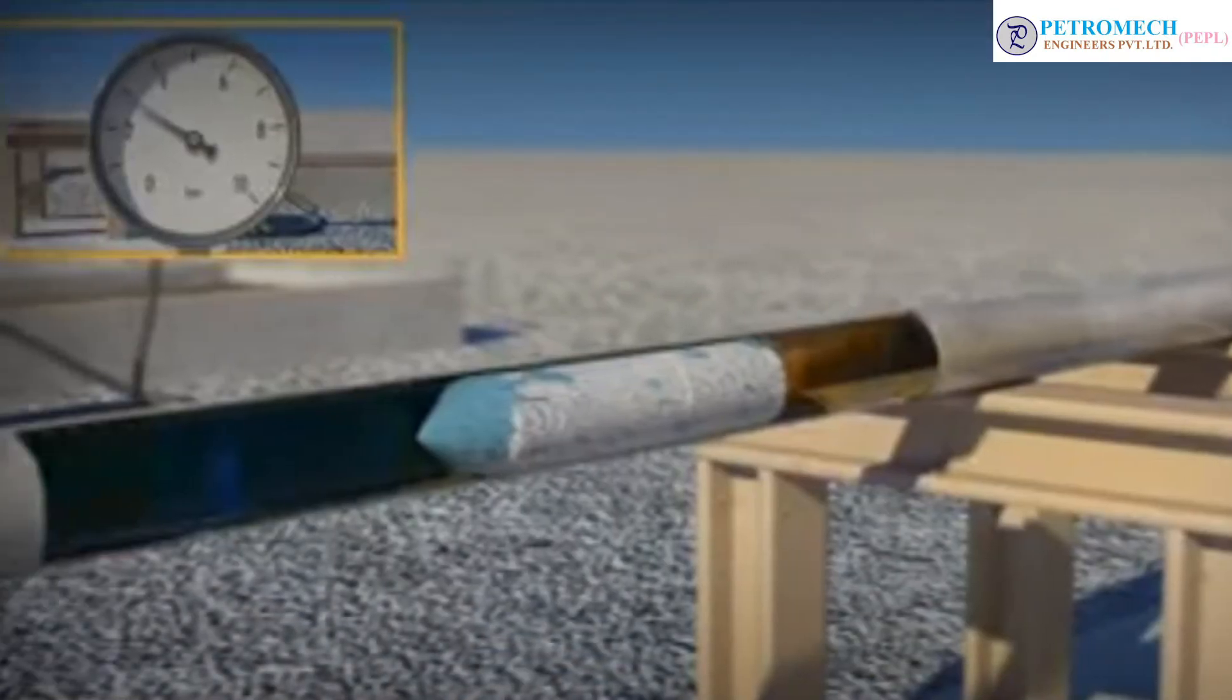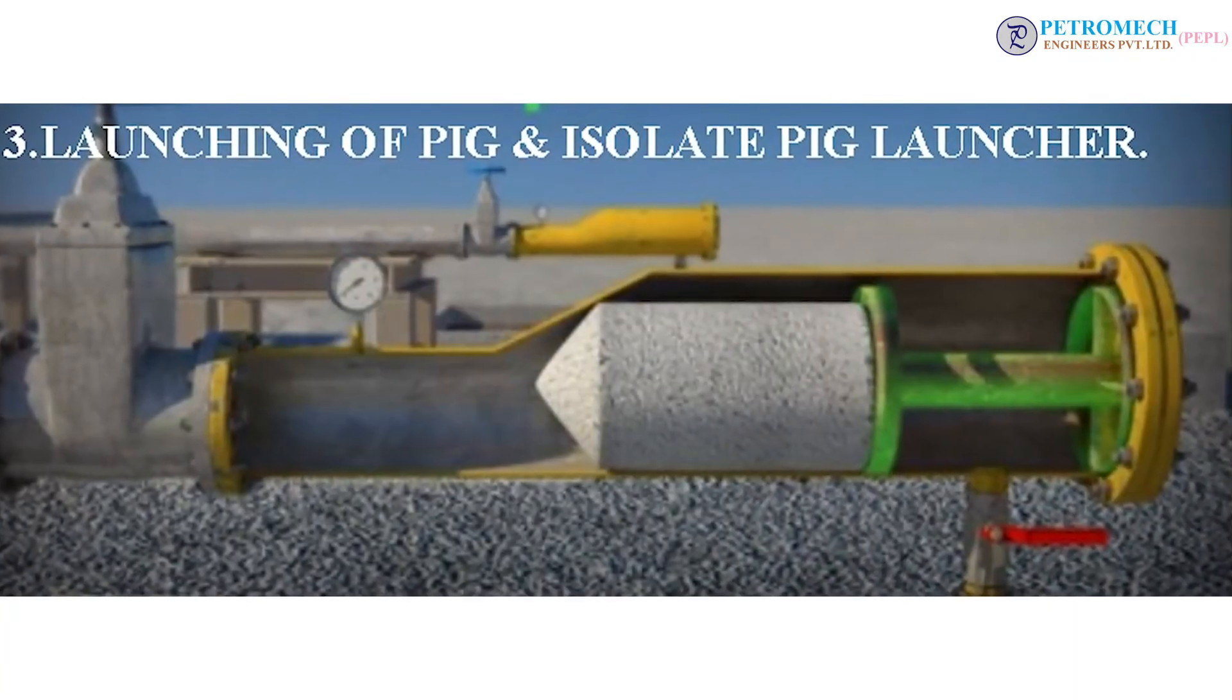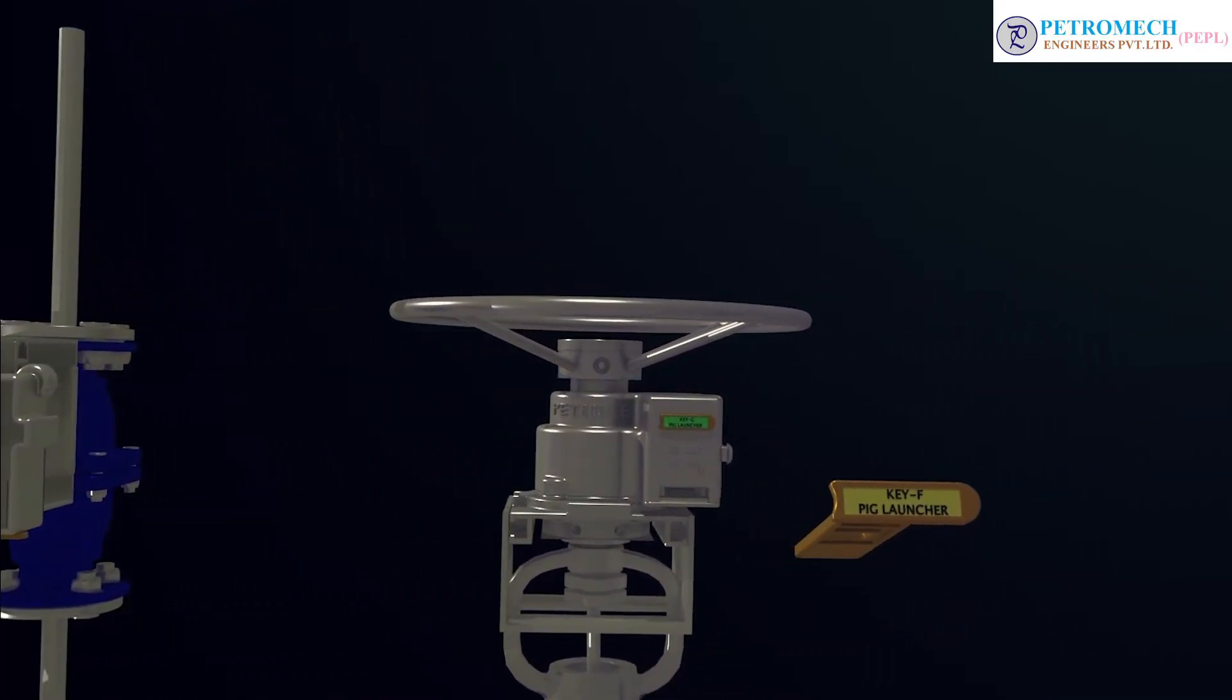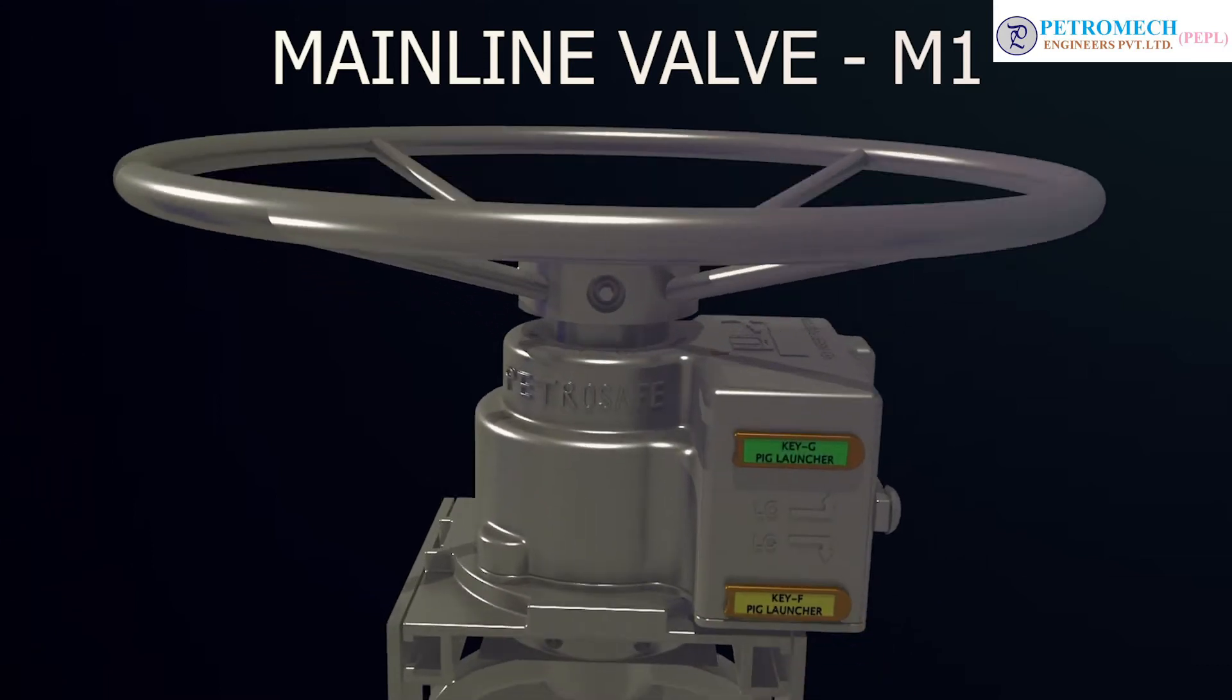Launching of pig and isolate pig launcher. Step 16: Insert key F into main line valve M1. Open the valve by releasing key G.